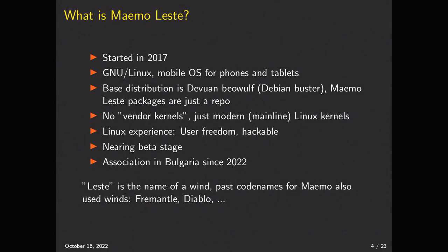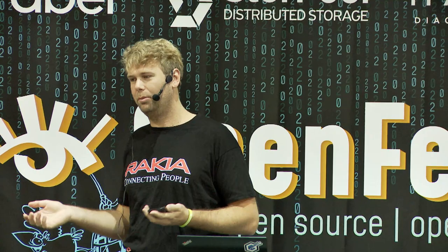It is a phone OS that runs Debian - or Devuan in our case, but it's basically the same thing. It's really like you take a laptop, you install Debian, and you have everything. Apt-get install Firefox, you have Firefox. Apt-get install Thunderbird, you have Thunderbird. You won't have a good time using Thunderbird on a very small screen without a keyboard, but you can do it. There are a lot more packages that are much more useful.